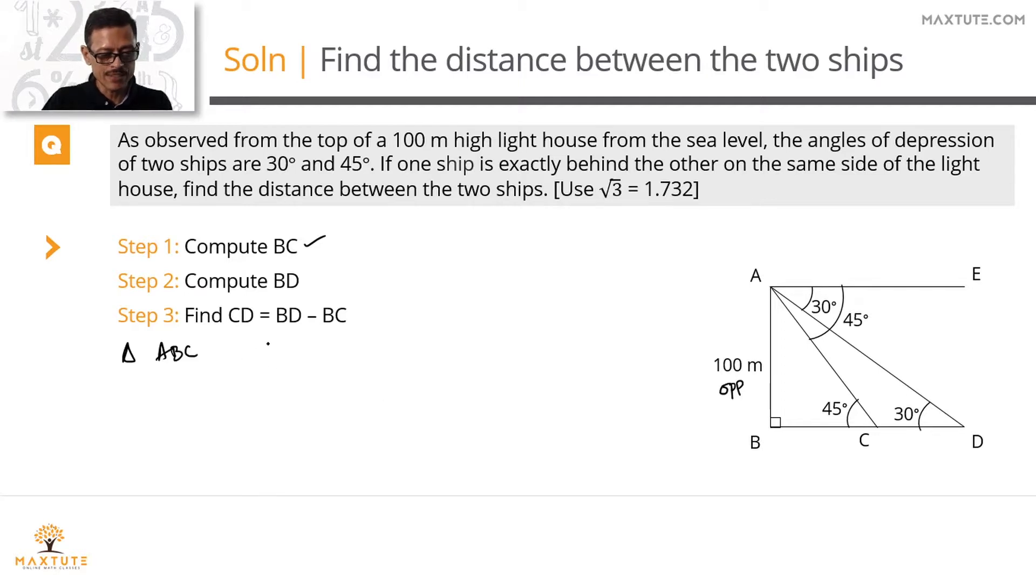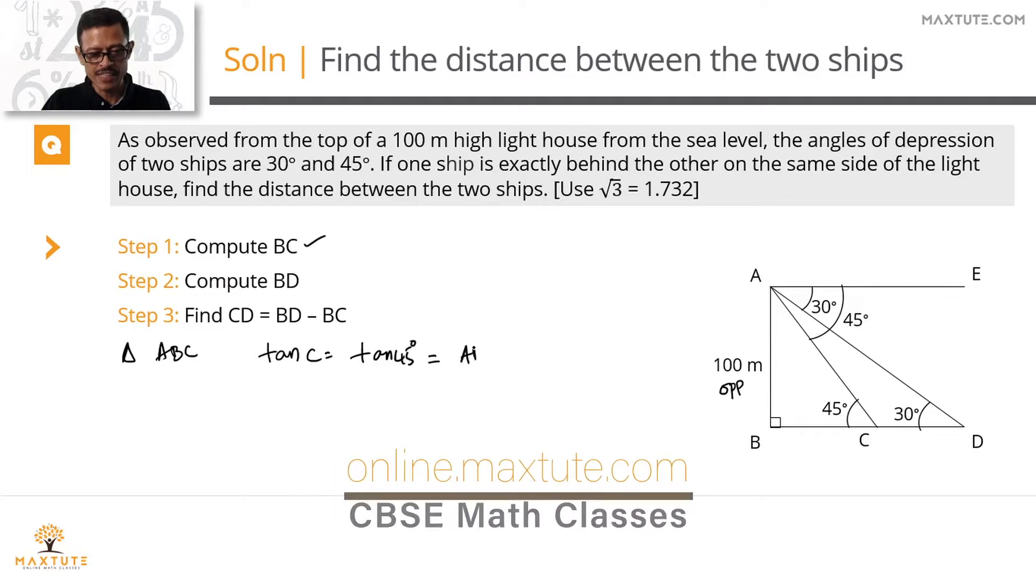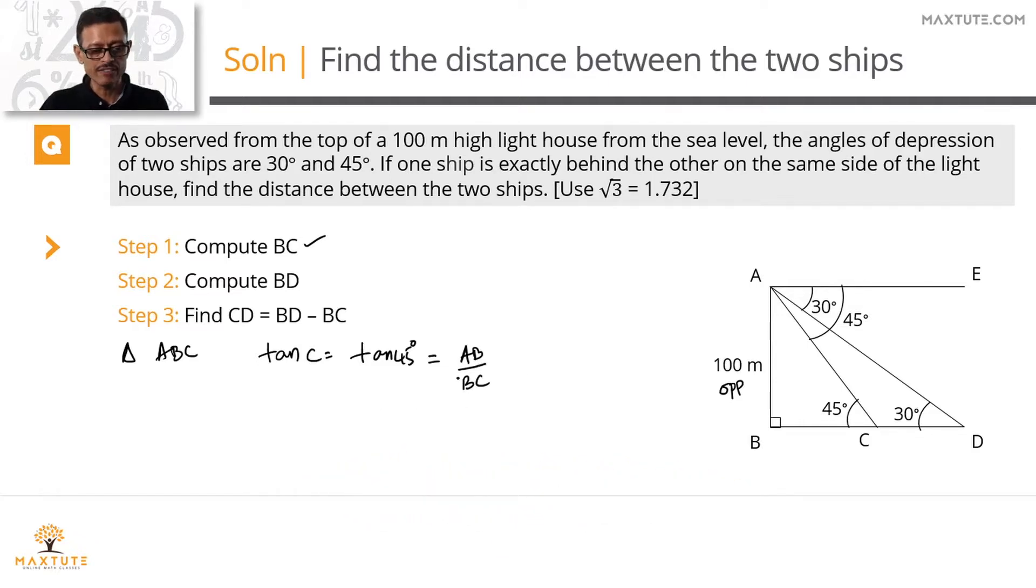In triangle ABC, tan of angle C, which is tan 45 degrees, equals the opposite side AB divided by adjacent side BC. Tan 45 equals 1, and AB equals 100 meters. Cross multiply, and we get the value of BC equal to 100 meters. So step one is done.